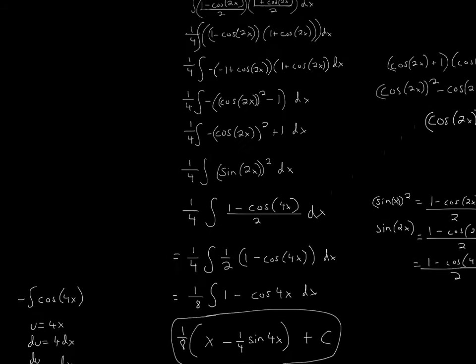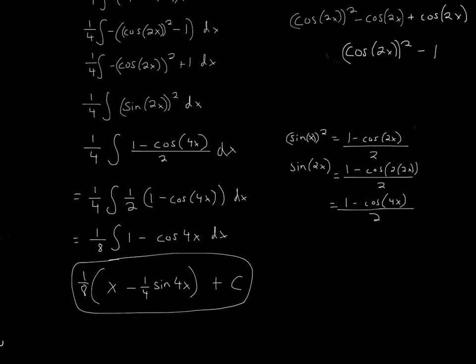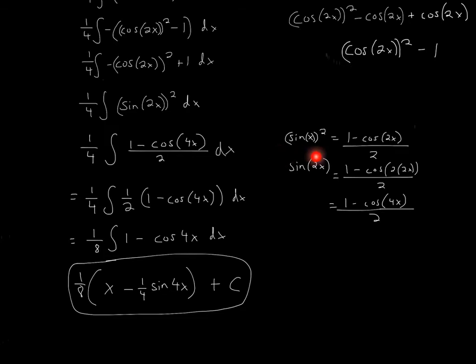Now we use another trig identity to convert this one. So we have sine, so the original trig identity is sine x squared equals 1 minus cosine 2x divided by 2. In this case, since we have a 2x in the middle, I'll just substitute in the 2, and now it becomes 1 minus cosine 2, and since our x is actually 2x, it would become like this, and so it would actually be 1 minus cosine 4x divided by 2.